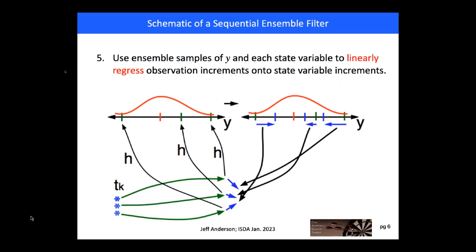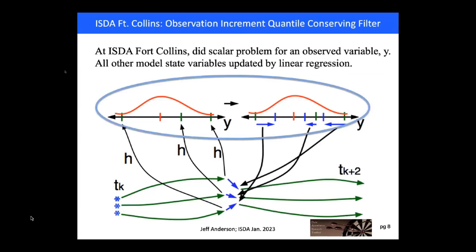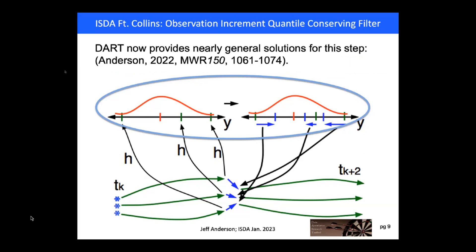We repeat that operation for all other observations available at time T sub K plus one, and when all are assimilated we move the model forward to the next observation time. In Fort Collins I talked about a very general technique called a quantile conserving ensemble filter for computing the observation space increments — that scalar problem. That work is an extremely general solution, now available in DART and documented in a Monthly Weather Review reference from last year.